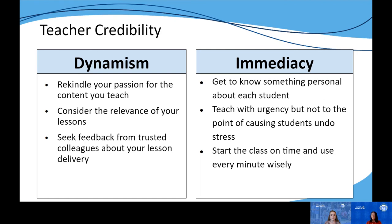The final component is immediacy — how students see us in terms of accessibility and relatability. The text suggests getting to know something personal about each of our students so they can see we're making genuine connections with them. Immediacy also involves teaching with a sense of urgency — not to the point of stressing students, but so that students see we value their learning and their time and are making the most of the time we have together. To help with that, the text says to make sure we start our classes on time and use every second wisely. With an effect size of 1.09, these four components make it critically important to think about which are our natural strengths and which are areas in which we need to grow.